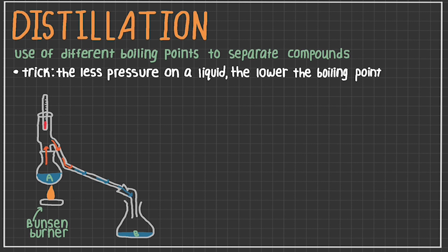By the end, you should have a compound A in liquid form in one flask and a compound B in liquid form in the other.